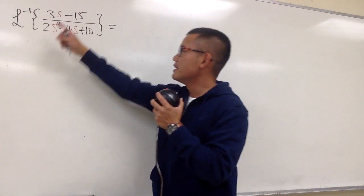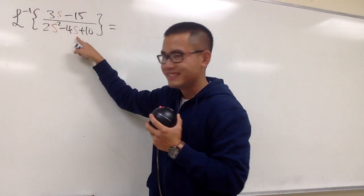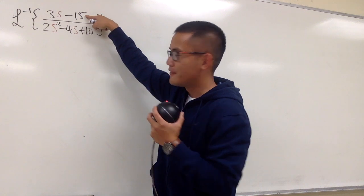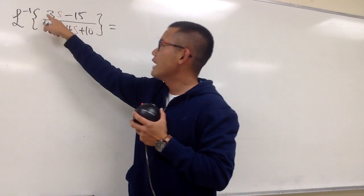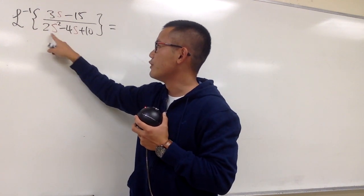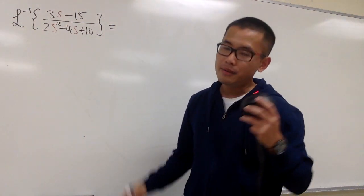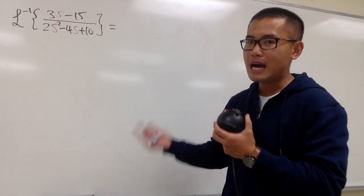We are going to figure out the inverse Laplace transform of this, and you see that s, s, s, they are all in red. This is my 5. And here's the trouble. We have the 3 in front of this s, and then we have this 2 in front of this s squared. But it's okay, because we can factor it out.